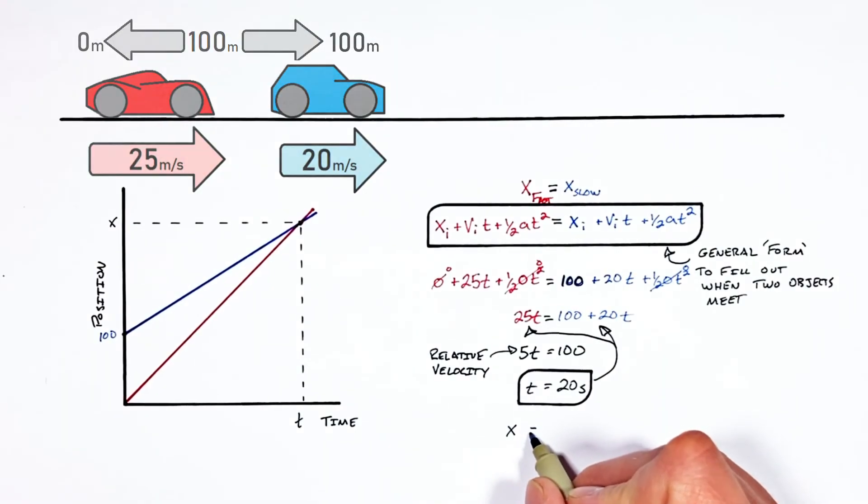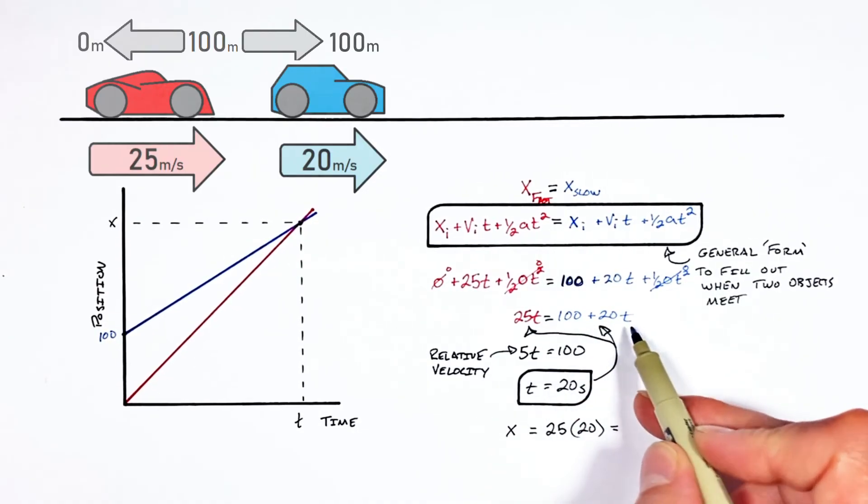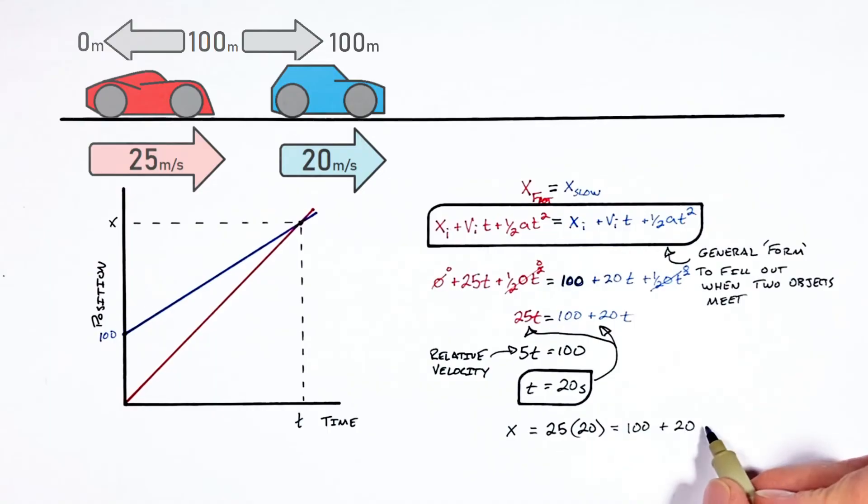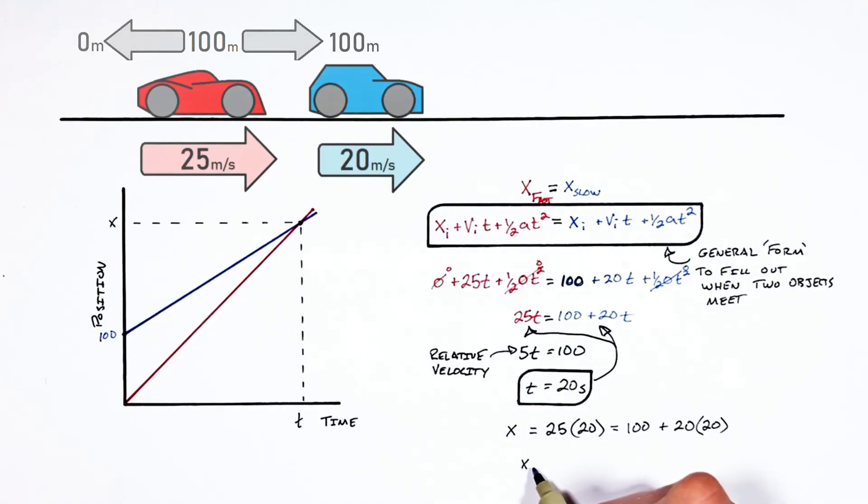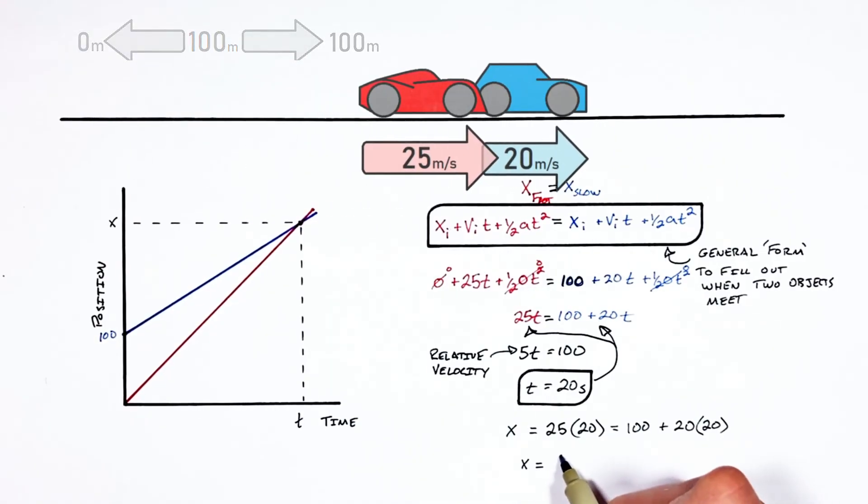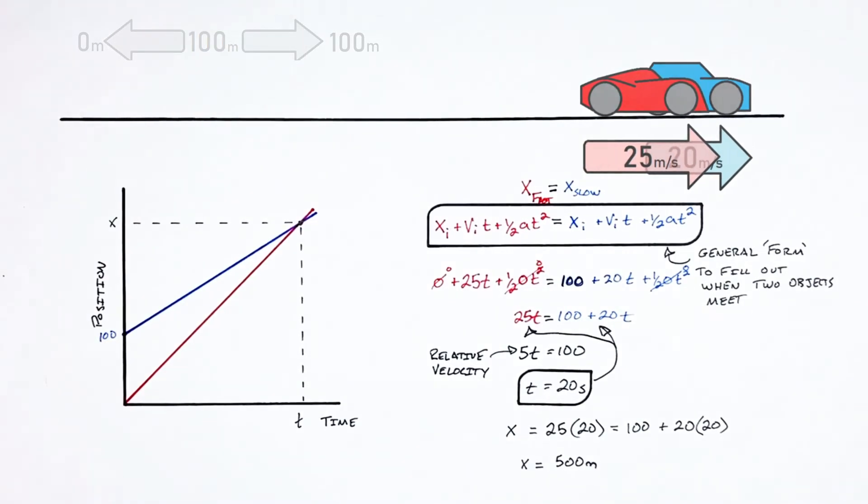So the position where they meet is going to be equal to either 25 times 20. Or you could say it's also equal to, subbing our 20 in right here, 100 plus 20 multiplied by time which we know is 20 seconds. And we find the two vehicles meet at a position of 500 meters.